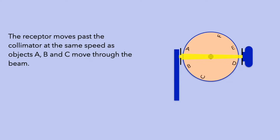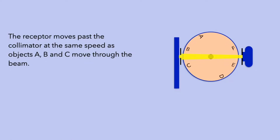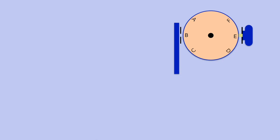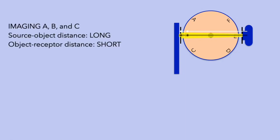Note that in these positions, structures D, E, and F, which are located on the opposite side of the disc, will be superimposed over the images of structures A, B, and C. Now let's consider the geometry for the image projections for these structures. When structures A, B, and C are being imaged, the source-object distance is long and the object-receptor distance is short. With this geometry, image magnification and unsharpness are minimized, and thus structures A, B, and C will cast sharp images.